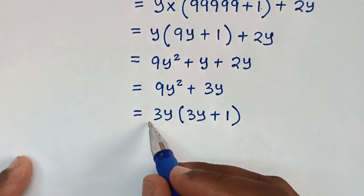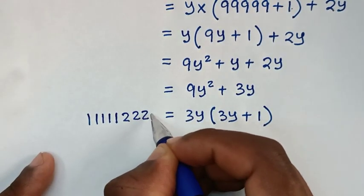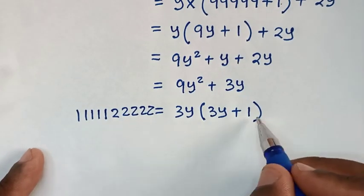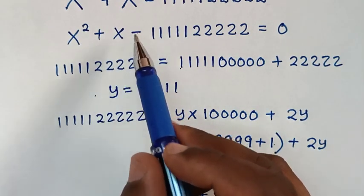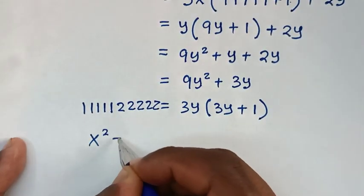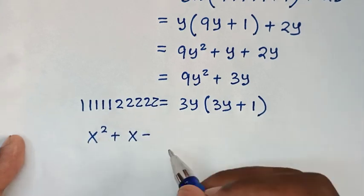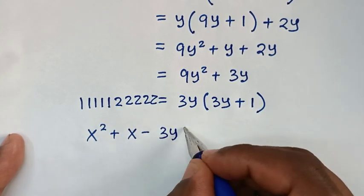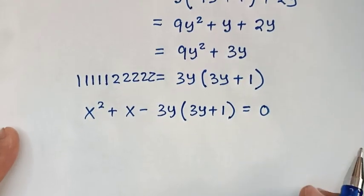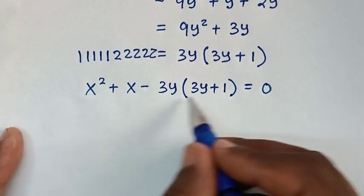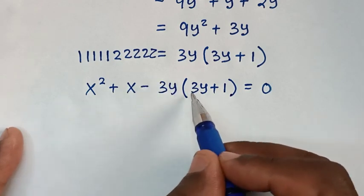So this is the simplified form of the long number 1,111,122,222 in terms of y, which is 3y(3y + 1). We'll substitute this into our equation. So it will be x squared plus x minus 3y times 3y plus 1, equal to 0. This is a quadratic equation in terms of x, where the constant is negative 3y times 3y plus 1.